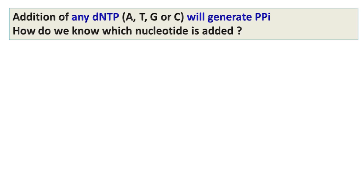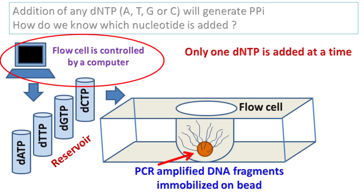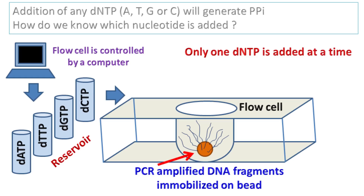To solve this problem, the reaction is carried out in a flow cell where only one dNTP is added at a time. The flow cell is controlled by the computer, which knows which dNTP is added. Because reagents are coming in and out of the flow cell, the template DNA can be easily flushed out. To avoid this, the template DNA is immobilized on a bead which remains in the flow cell.